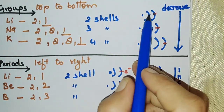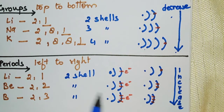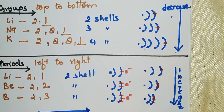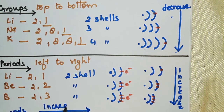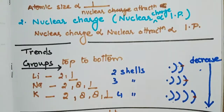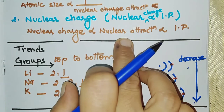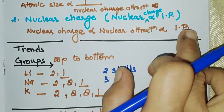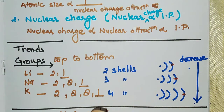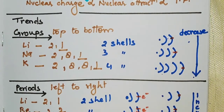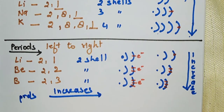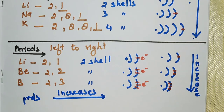To summarize: going top to bottom in a group, ionization potential decreases; going left to right in a period, it increases — because nuclear charge increases, nuclear attraction increases, and the energy required to remove the last electron also increases. I hope you have understood ionization potential through this video. Thank you for watching. In the next video, we will be seeing electron affinity and its trends.